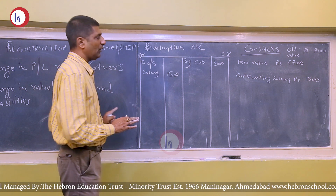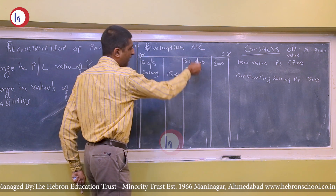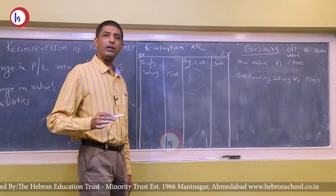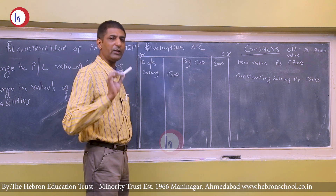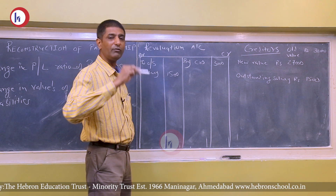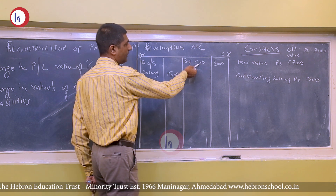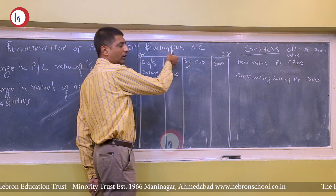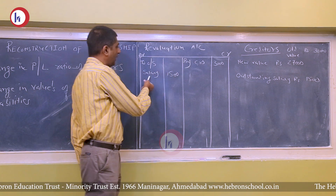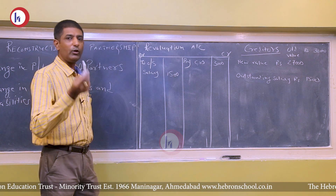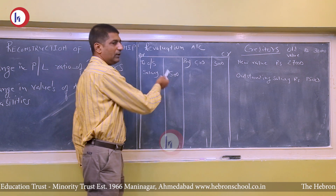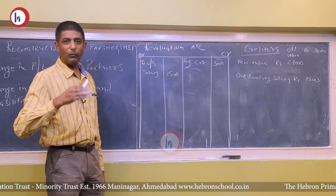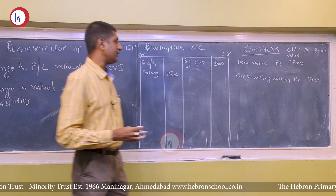For journal entries: when the liability decreases — Creditors Account Dr. ₹3,000 to Revaluation Account ₹3,000. When the liability increases — Revaluation Account Dr. to Outstanding Salary ₹1,500. Entries that are put on the credit side of the revaluation account will be debited in the journal entries, and revaluation account itself will be credited.